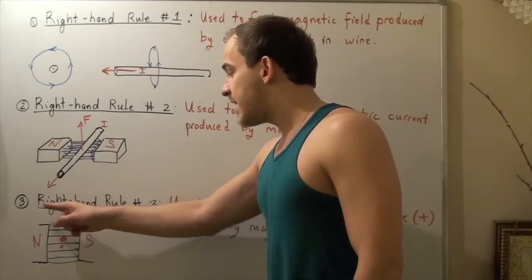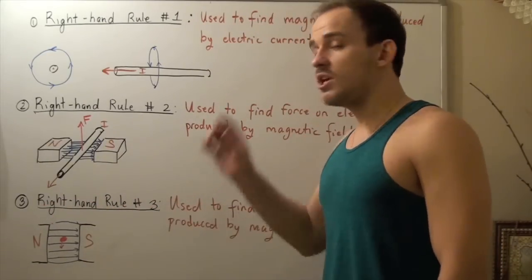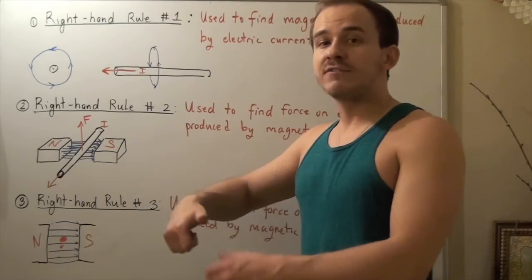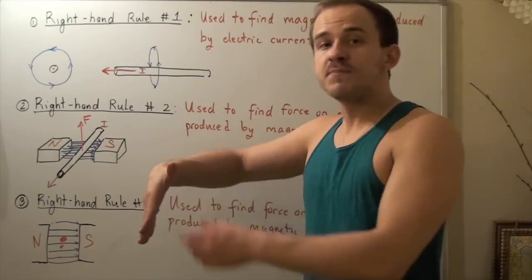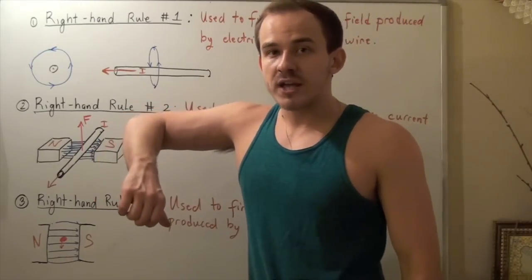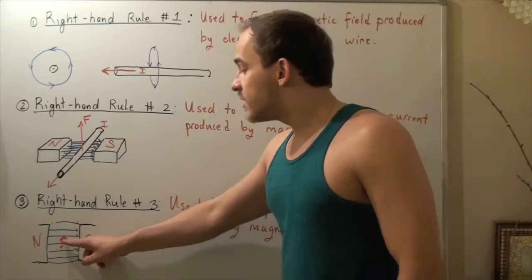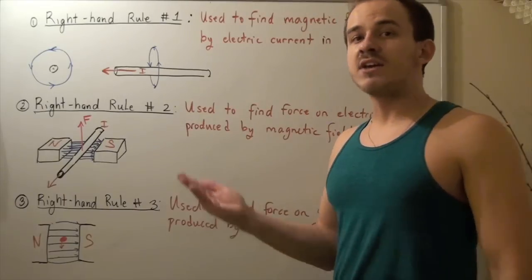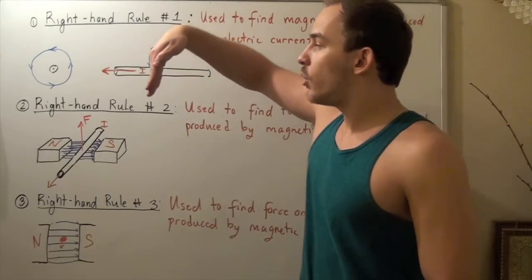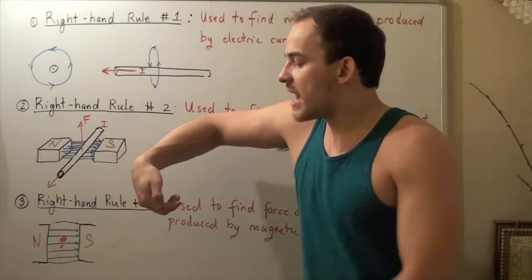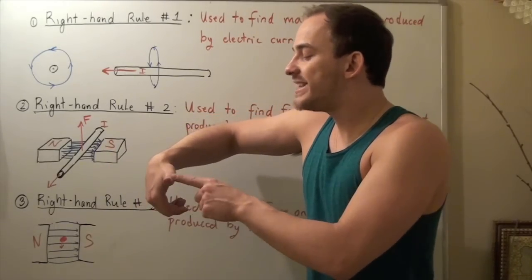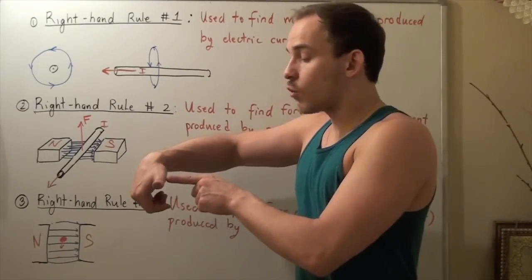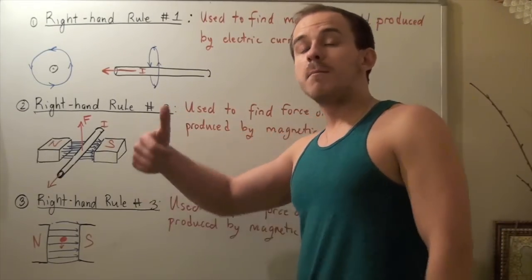Note that right-hand rule number three only works for positive charge. If this was a negative charge, I would use right-hand rule number three but then simply reverse the direction. Suppose this is a negative charge traveling downward in the same magnetic field. I use the same exact rule — I point it downward, then point it this way, and raise my thumb up. But since I'm dealing with a negative charge, I have to reverse my direction. So the force is actually not outward, but inward.